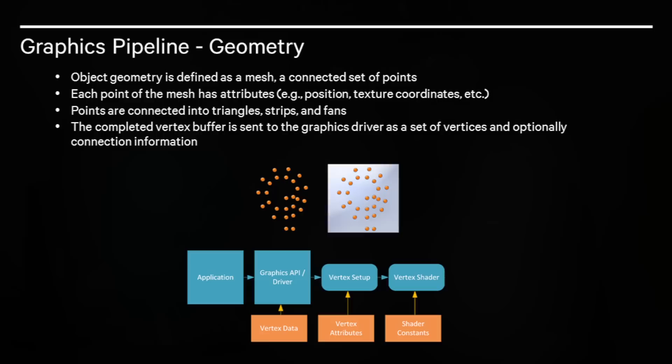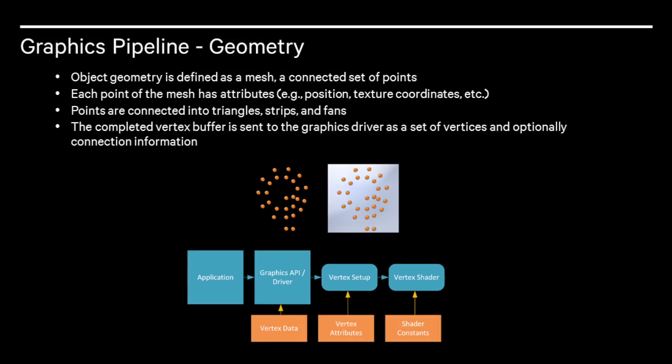The pipeline starts with object geometry defined in a mesh, a series of connected points. We call these points vertices. Each vertex has attributes such as position, one or more sets of texture coordinates, surface normal, and color. These attributes are sent by the application to the graphics driver to be rendered.